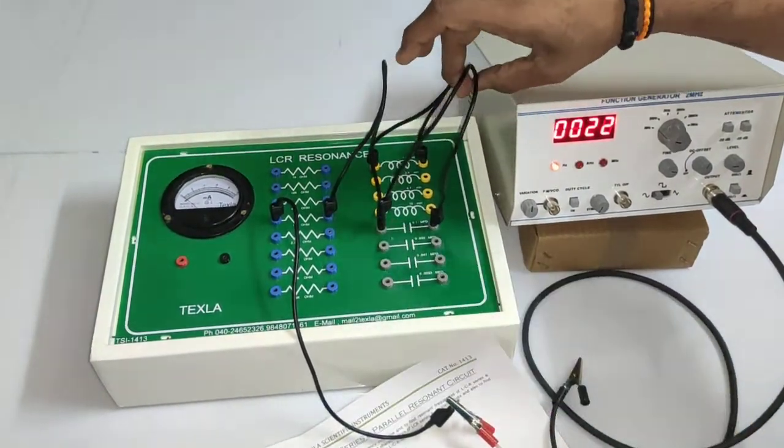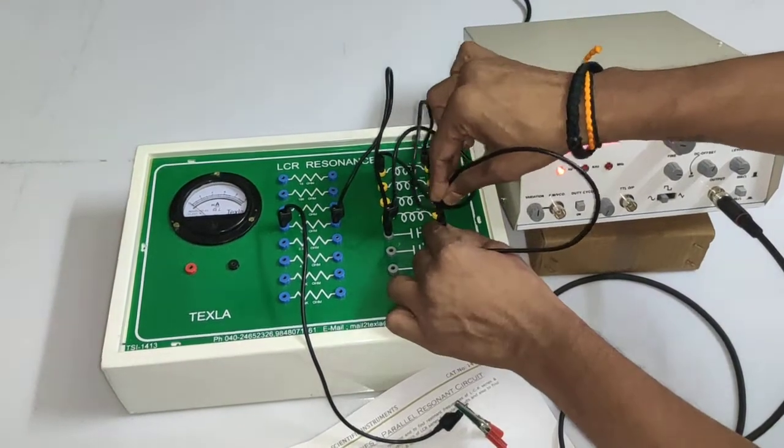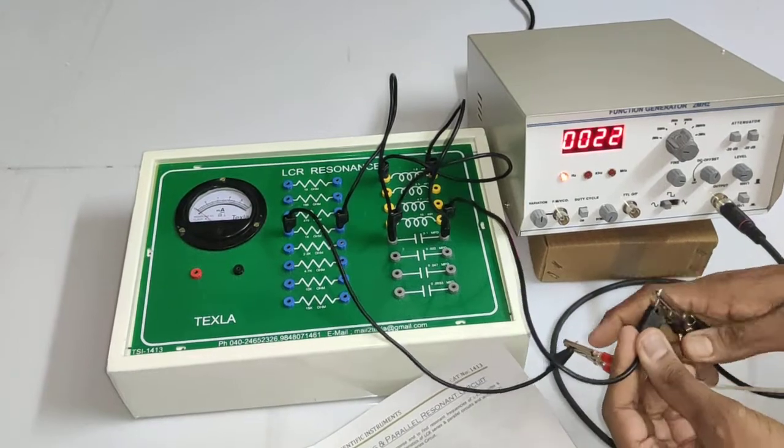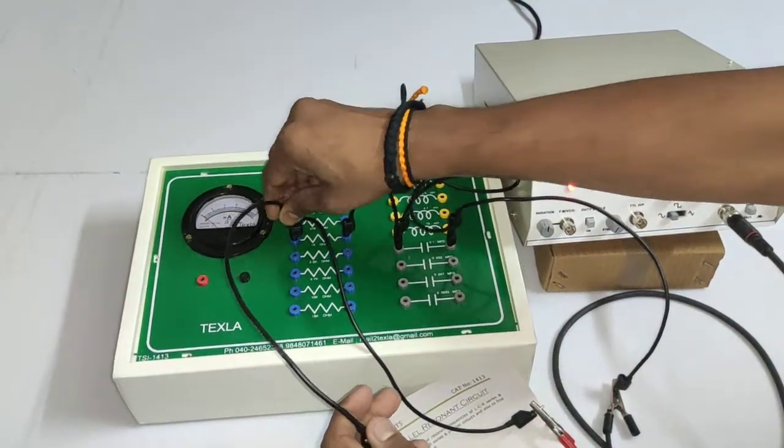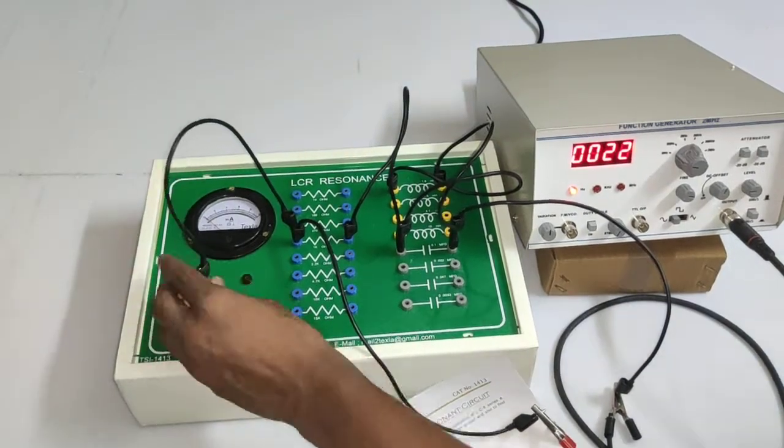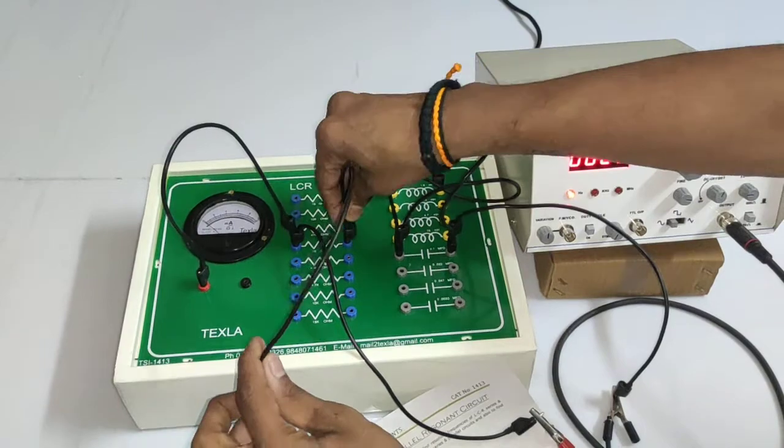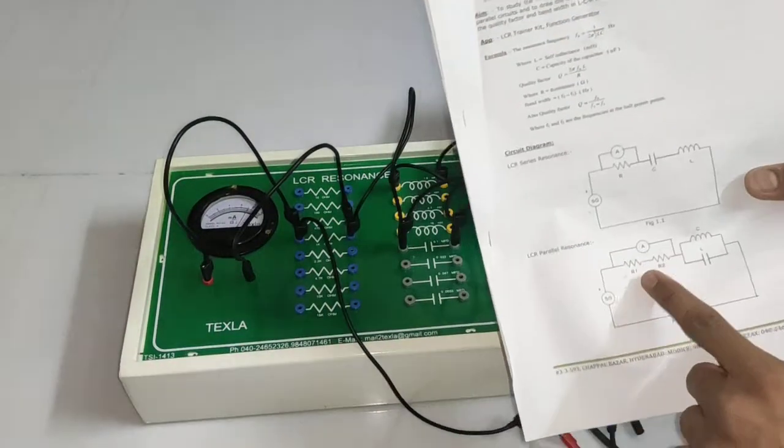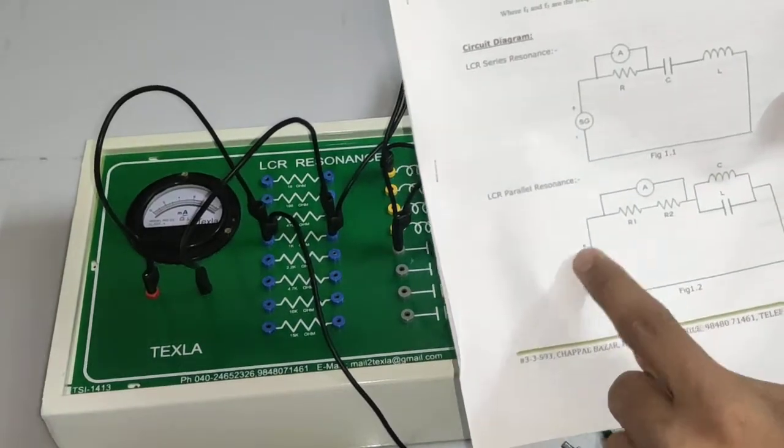These two are parallel connections. So now I am giving for function generator connection, function generator negative is given. So this connection has been done. Across resistance I am connecting meter, milliammeter. So this connection is done. R across ammeter, LC parallel is given to function generator.